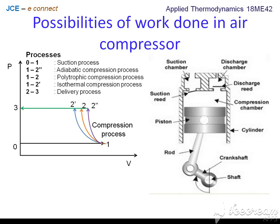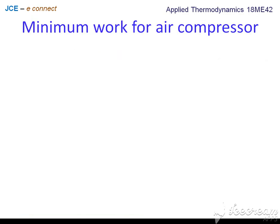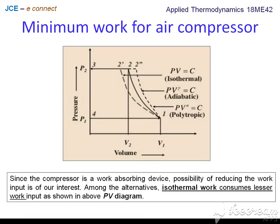Among these, the area under the PV curve — whichever is the smallest — signifies the minimum work. As an engineer, we would like to invest the least amount of work. From the PV diagram, the possibility of reducing work input is of our interest. Among the alternatives, isothermal compression consumes the least work input, as shown in the PV diagram.